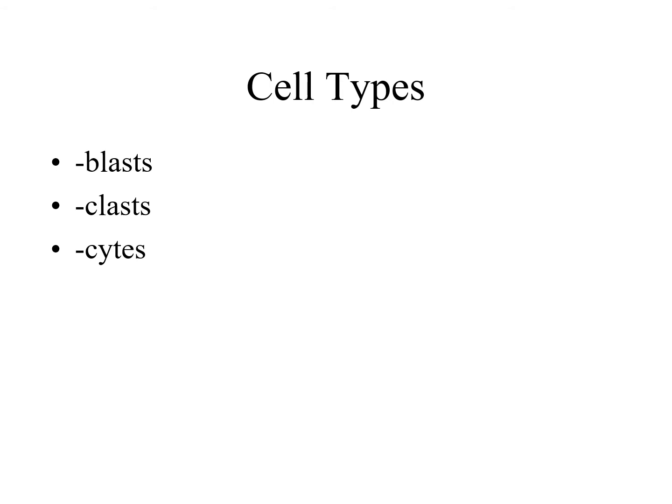Clasts are cells that destroy or break down connective tissue — we recycle and rebuild many body parts over a lifetime; your skeleton may be rebuilt five or six times. An osteoclast breaks down bone matrix so it can be rebuilt. Cytes are mature cells: osteocytes, leukocytes, chondrocytes. They are neither blast nor clast — simply mature, resting cells.